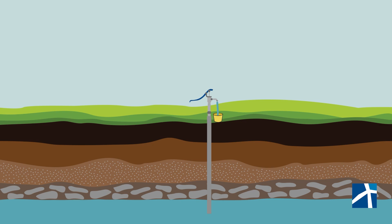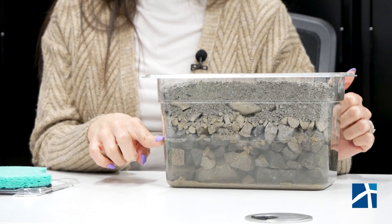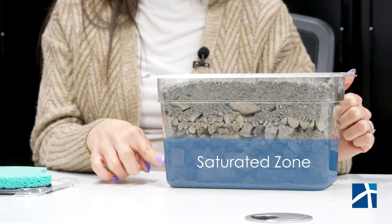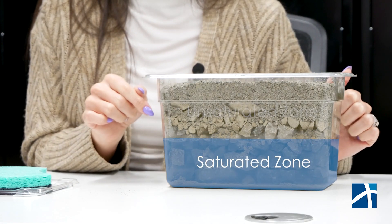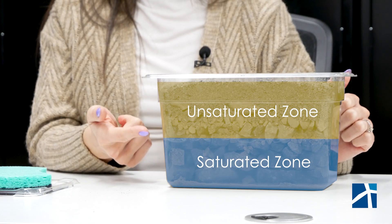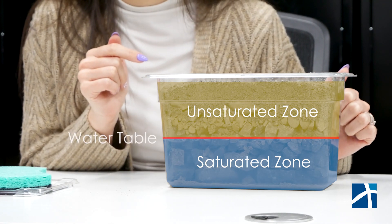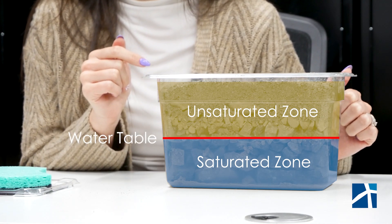You might have seen a well before — a deep hole that lets us pull water from underground. Wells work by reaching down into an aquifer where the water is stored. The water table is the very top of the groundwater. Imagine this container represents a section of the ground. Everything below this line is completely soaked with water — that's called the saturated zone. Everything above it is dry, with air filling the spaces between the soil and rock. This water level is called the water table.